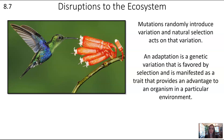As a bit of review: mutations randomly introduce variation and natural selection can act on that variation, leading to adaptations. An adaptation is a genetic variation favored by selection, manifested as a trait that provides an advantage in a particular environment. Over time, populations become well adapted to their environments.